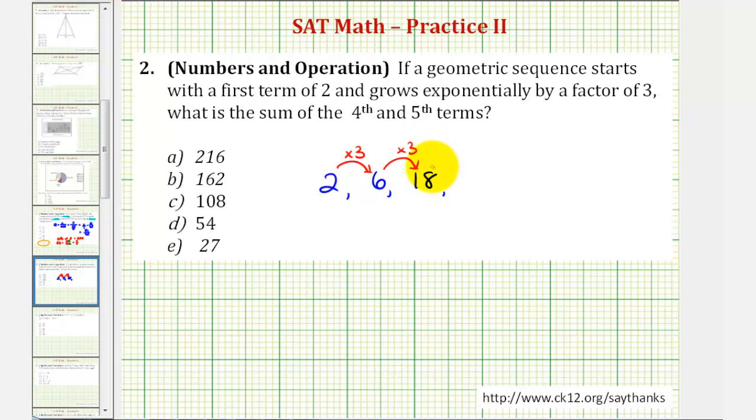To find the fourth term, we'll multiply by three again. Eighteen times three is equal to fifty-four.